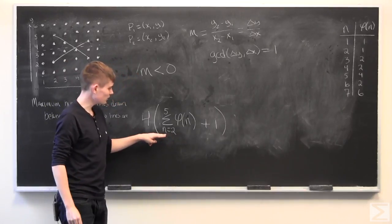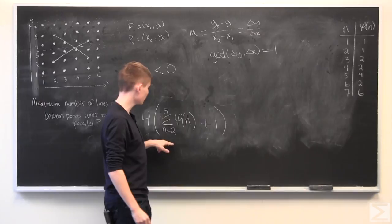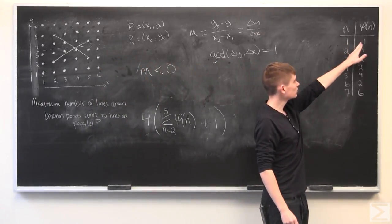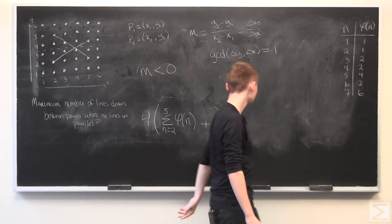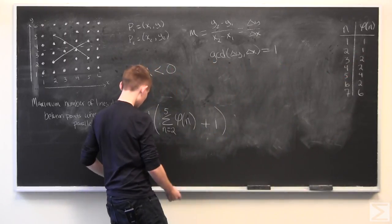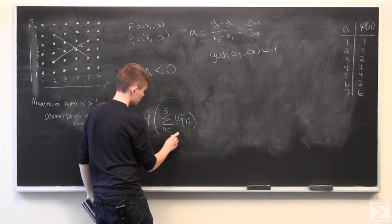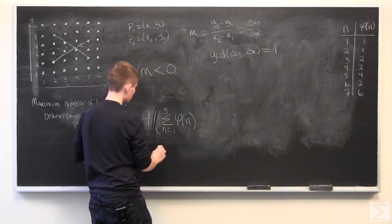And the last thing we can do to simplify this is, if you notice, this sums from n equals 2 to 5 and we skip over n equals 1. However, when n equals 1, the Totient function is equal to 1. So we can kind of absorb this one in if we just start from n equals 1 to 5.